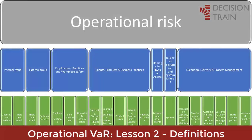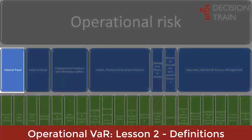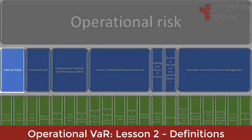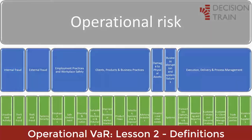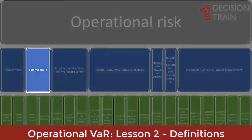The seven types of official Basel 2 operational risk events are listed below with some examples for each category. 1. Internal fraud: misappropriation of assets, tax evasion, intentional wrong marking of positions, bribery. 2. External fraud: information theft, piracy, damage, theft, and counterfeiting of third parties.